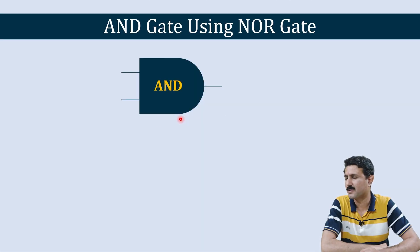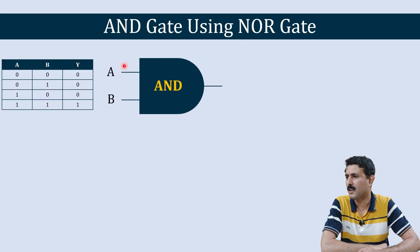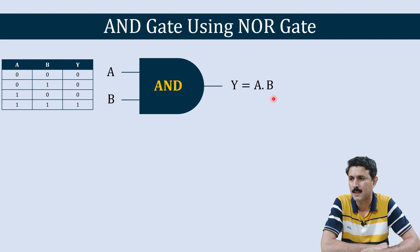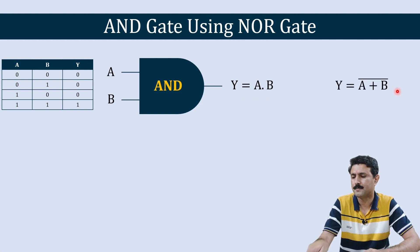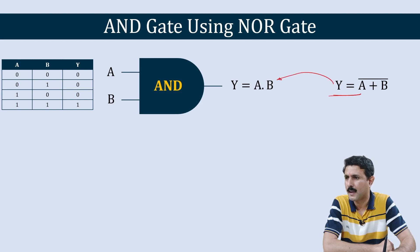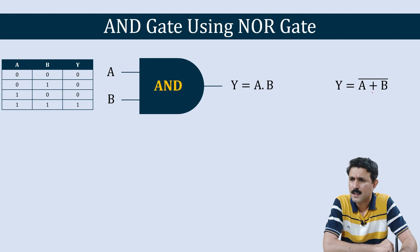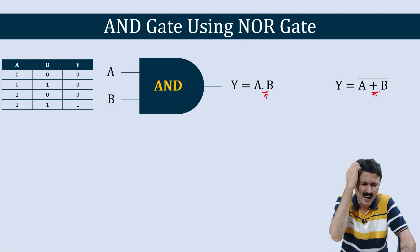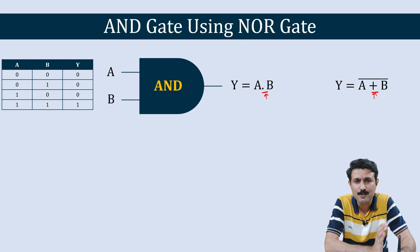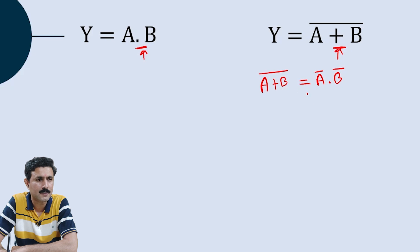Now it is time for the AND gate. Here is the symbolic representation of AND gate and its truth table. The output equation of AND gate is Y = A·B. We have the NOR gate equation and need to modify it to get AND. Here we want multiplication, but we have addition. To combine these, remember De Morgan's theorem: (A + B) bar = A bar · B bar. That is what we want — AND operation from OR.